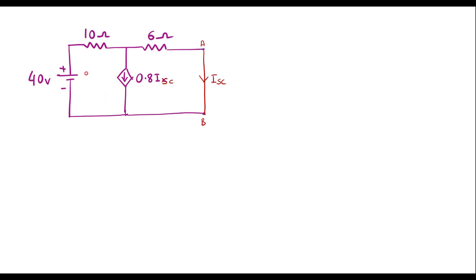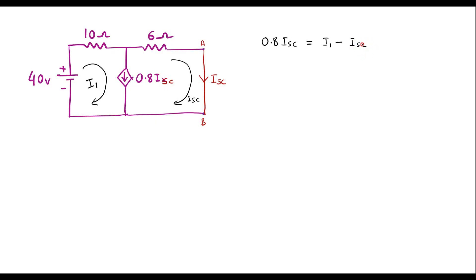I will simplify using loop analysis. Let me assume the current through the first loop is I1, and the current through the second loop is ISC. There is a current source between the two loops. Analyzing the current source: 0.8 ISC equals I1 minus ISC, which gives 1.8 ISC equals I1, or ISC equals I1 divided by 1.8. Let me call this equation 1.